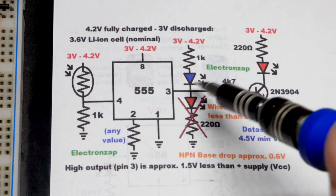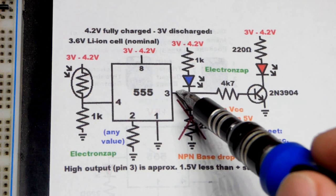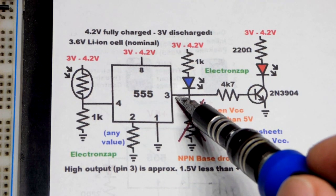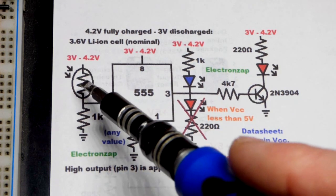In this video we're going to look at a common problem in electronics, when the output cannot provide the power that you need. We're going to look at the 555 timer.